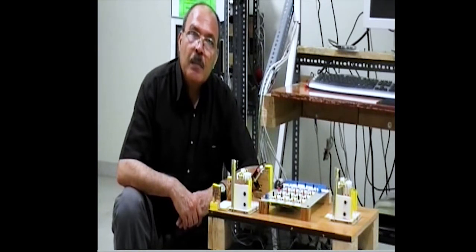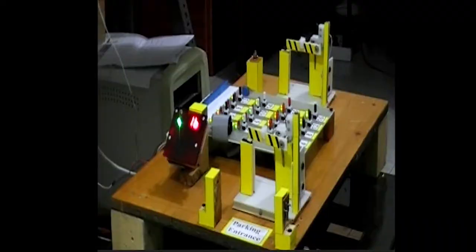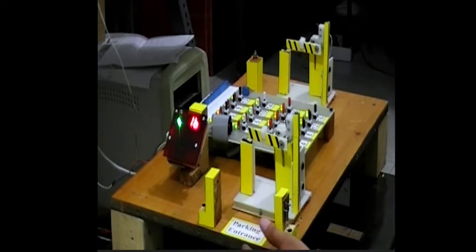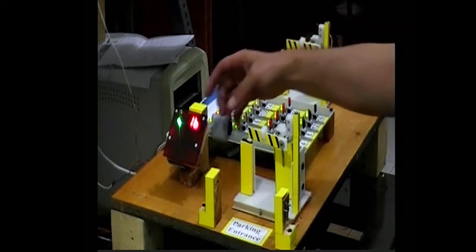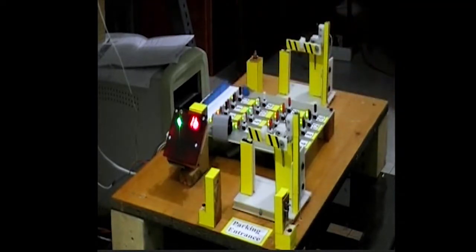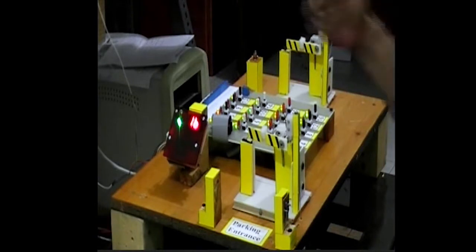This is a PLC-controlled automated parking lot. The system consists of an infrared barrier that, when it breaks, means the car is in front of the parking lot and it wants to get in.